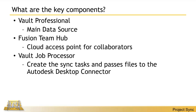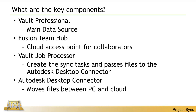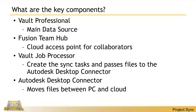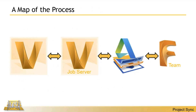The Job Processor runs on basically a Vault client and handles scheduled tasks. It's the one that passes files to the Desktop Connector, and the Desktop Connector is what moves files from the PC to the cloud. So the flow is: Vault passes files to Job Processor, which passes to Desktop Connector, which pushes to Fusion Team. Going the other direction: Fusion Team to Desktop Connector to Job Processor, which puts it back into Vault.